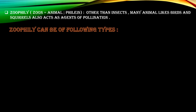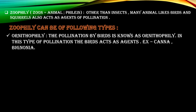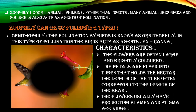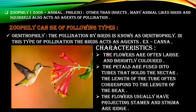The next type of pollinating agent is animals other than insects — we call it zoophily. If it is pollinated by birds we call it ornithophily. For example, the Canna flower is pollinated by the hummingbird. The flowers are often large and brightly colored to attract birds. The petals are fused to form tubes that hold nectar, and the length of the tube often corresponds to the length of the beak of the bird. The flowers usually have projecting stamens and stigmas.